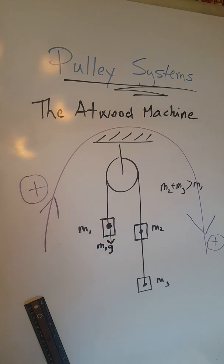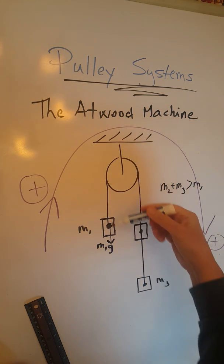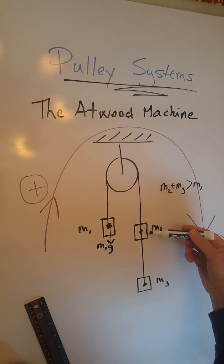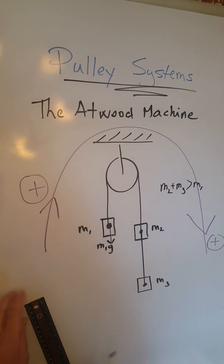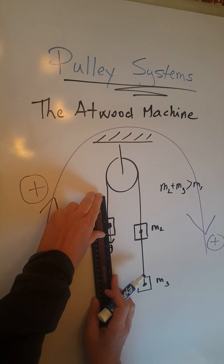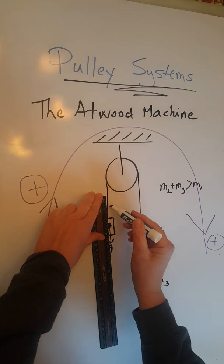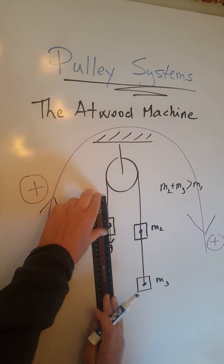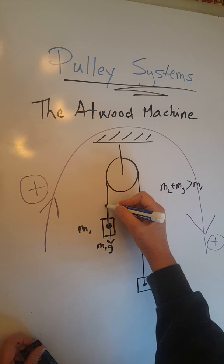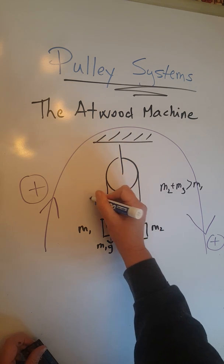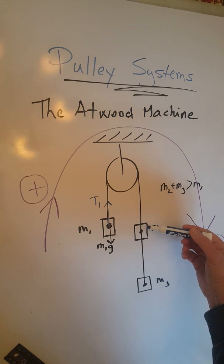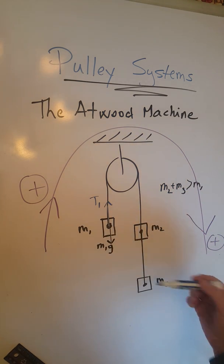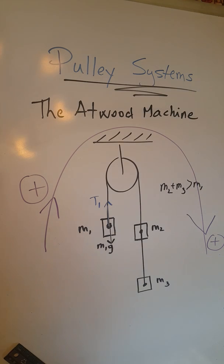Then we are going to have tension acting upon this object. Now this is going to be tension in this string. There will be another tension in this string. So tension is always a pull on the object. Let's go ahead and draw it upwards here as pulling on the object along the string, and let's call that t1, because again there will be two tensions in this problem. One tension in this string, and another tension in this string. So we are finished with m1.